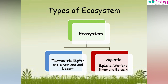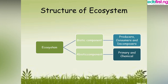Next is the structure of the ecosystem, also referred to as components of the ecosystem. The ecosystem is divided into two major components: the biotic component and the abiotic component. The biotic components are composed of only living organisms — 'bio' means life — so only living organisms are involved in this part of the ecosystem.